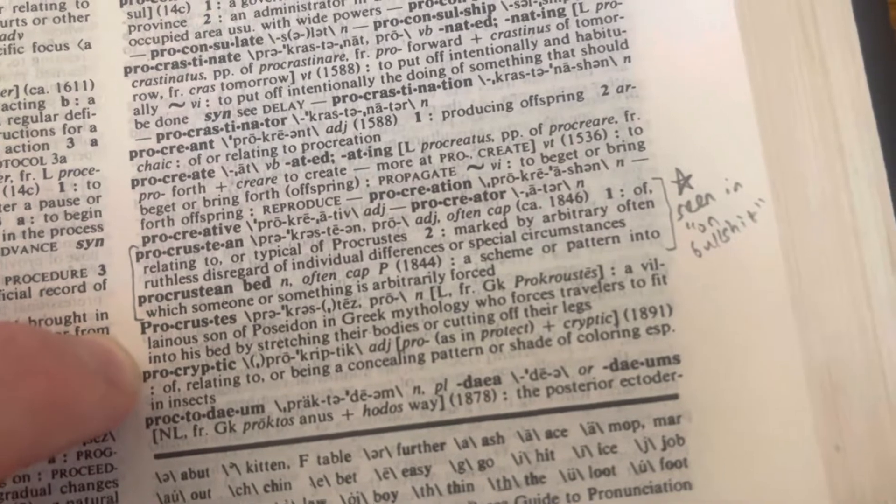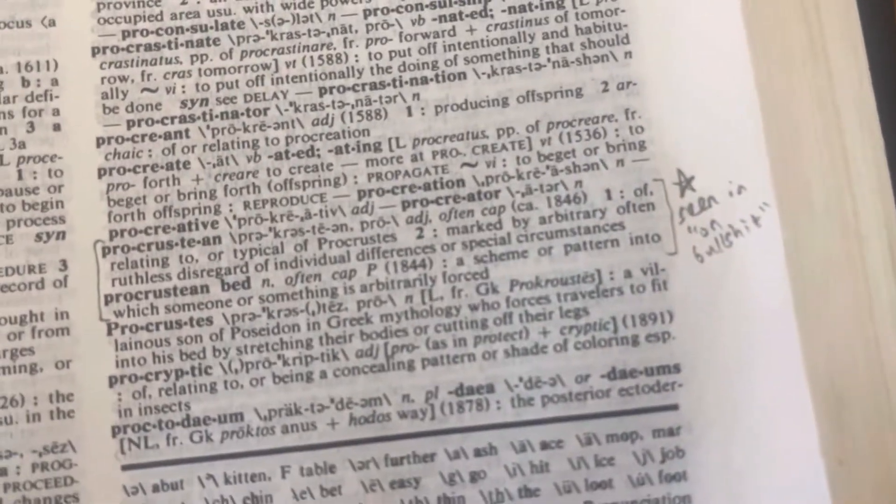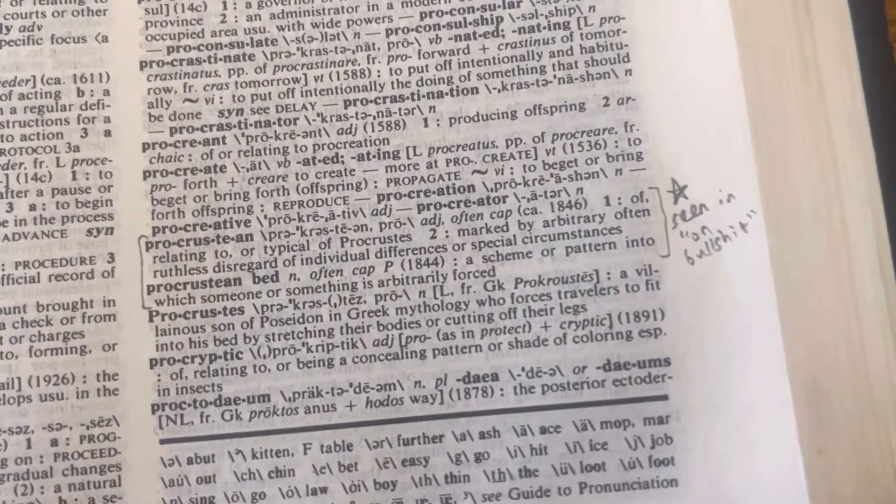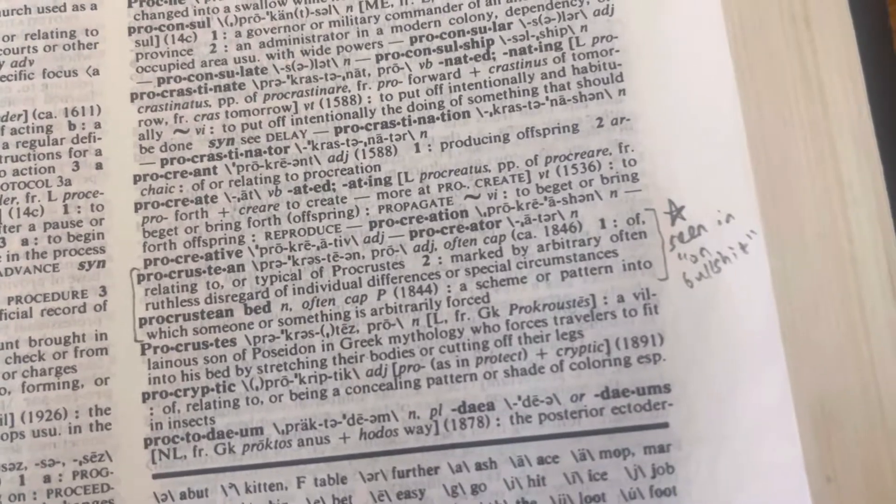A villainous son of Poseidon in Greek mythology who forces travelers to fit into his bed by stretching their bodies or cutting off their legs. Wow.